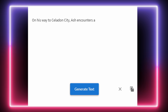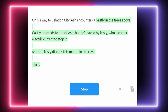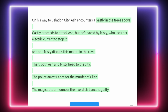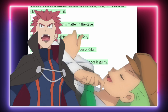This prompt is pretty open — the AI could go for a person or a Pokémon here. On his way to Celadon City, Ash encounters a Gastly in the trees above. Gastly proceeds to attack Ash, but he's saved by Misty, who uses her electric current to stop it. Ash and Misty discuss the matter in a cave, then both head to the city. The police arrest Lance for the murder of Silen. At least Ash got to battle him first. Lance is guilty. Misty is shocked. Ash feels guilty too. I'm not sure what to make of that. This seems to be the introduction of Misty to the story. At least we made it to Celadon.